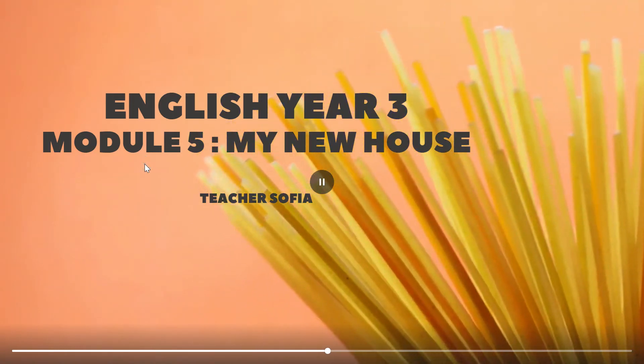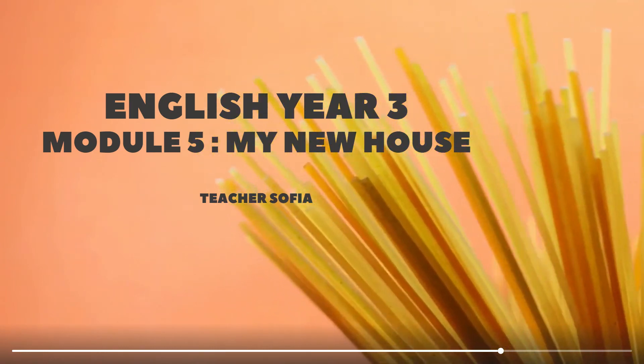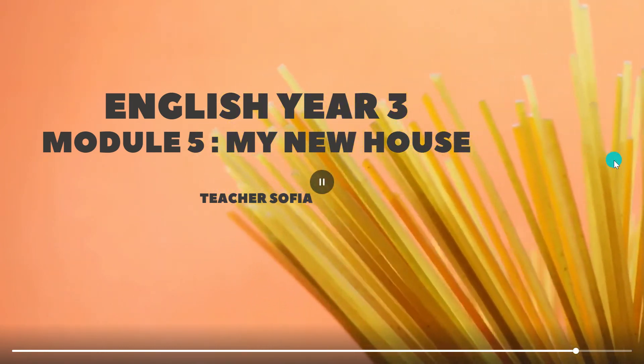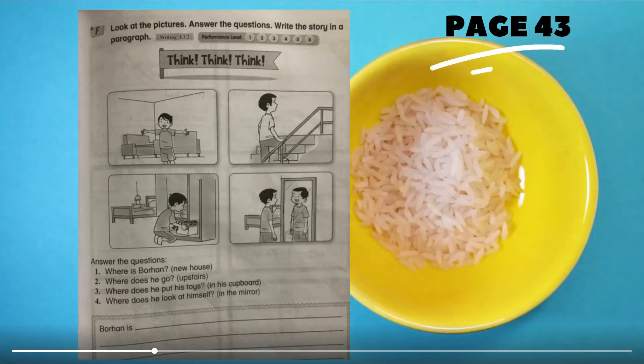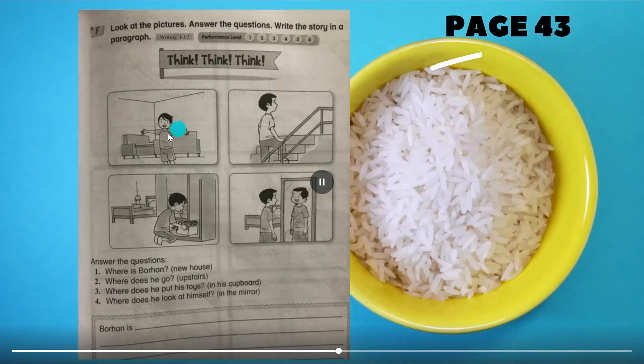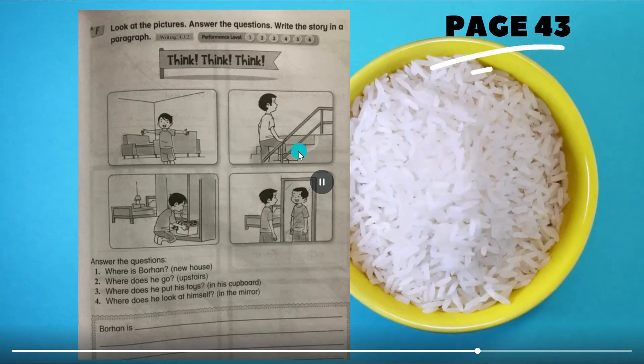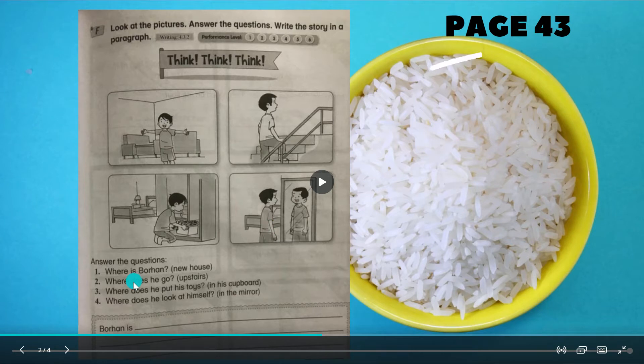Assalamualaikum and we meet again. We are still in module 5, My New House. Today we'll be doing Captain English book page 43. We have four pictures here - one, two, three, four - and we have four questions here. Each question one is for picture one, question two for picture two.